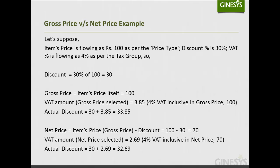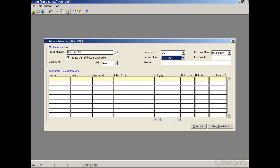Net Price is the item's price minus the discount (Gross Price minus discount), which is 100 minus 30 = rupees 70. The VAT amount if Net Price is selected will be rupees 2.69, since 4% VAT is inclusive in net price. The actual discount will be 30 + 2.69 = rupees 32.69.